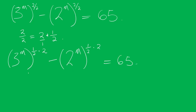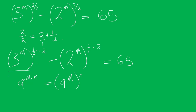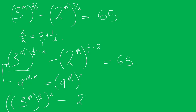Now, assuming this to be a whole number — by the law of indices, a to the power of m times n is the same as a to the power of m, all to the power of n. Applying this, you now have 3 to the power of m, all to the power of 1 over 2, all to the power of 2, minus 2 to the power of m, all to the power of 1 over 2, all to the power of 2, equal to 65.